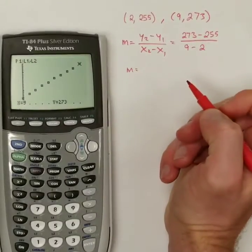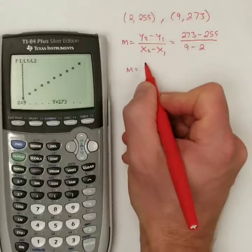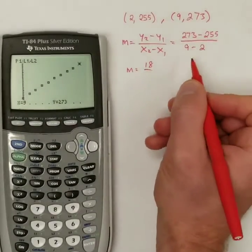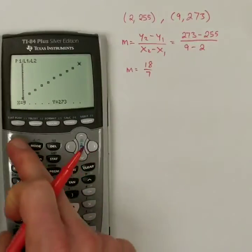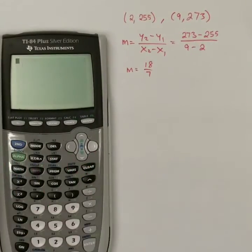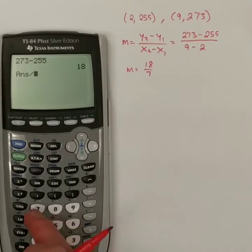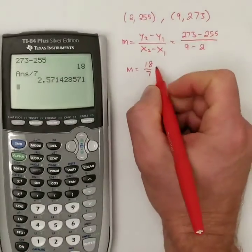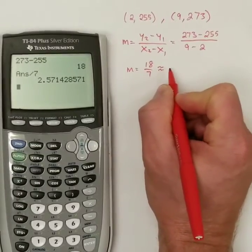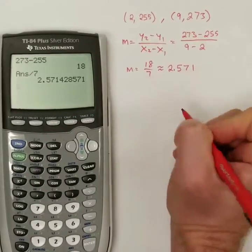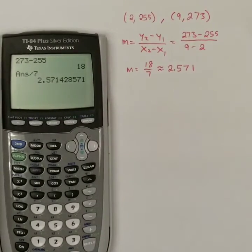273 minus 255 is 18. And then 9 minus 2 is 7. And let me go to second quit. So, I can do these calculations. I'm going to double check that. 273 minus 255 was 18. And I'm going to divide that by 7. And that gives me approximately 2.571. I'll round it to three places after the decimal there. So, that's approximately my slope.